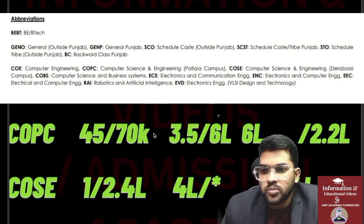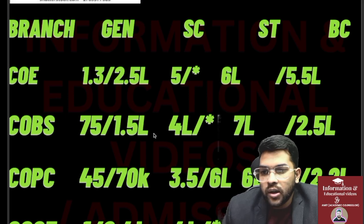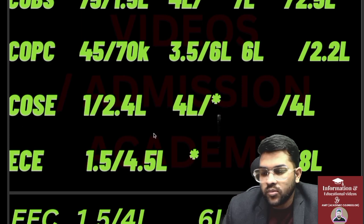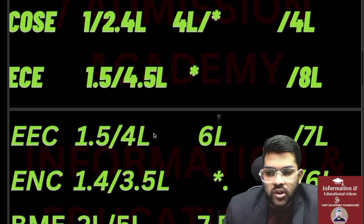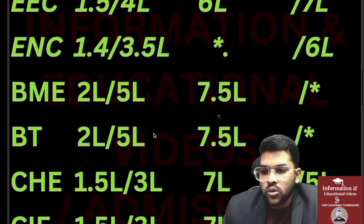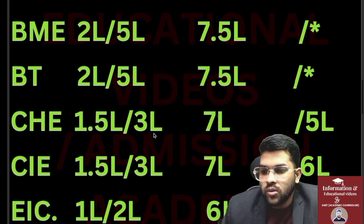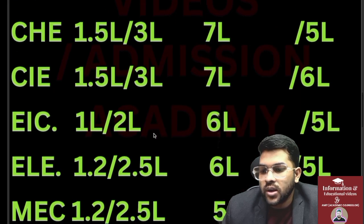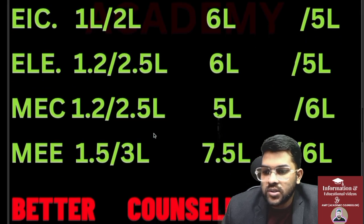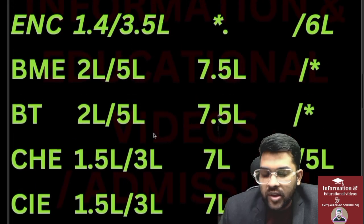For COSE, SC 4 lakh and BC 4 lakh. For ECE 1.5 — before slash is outside Punjab, after slash is Punjab — and 4.5 lakh for general; other categories can be checked on screen. EC 1.5 and 4 lakh; ENC 1.4 and 3.5 lakh; BME 2.5 lakh; Biotechnology 2 lakh and 5 lakh; Chemical 1.5 and 3 lakh; CIE 1.5 and 3 lakh; EIC 1 lakh and 2 lakh; ELE 1.2 and 2.5 lakh; MEC 1.2 and 2.5 lakh; Mechanical 1.5 and 3 lakh.